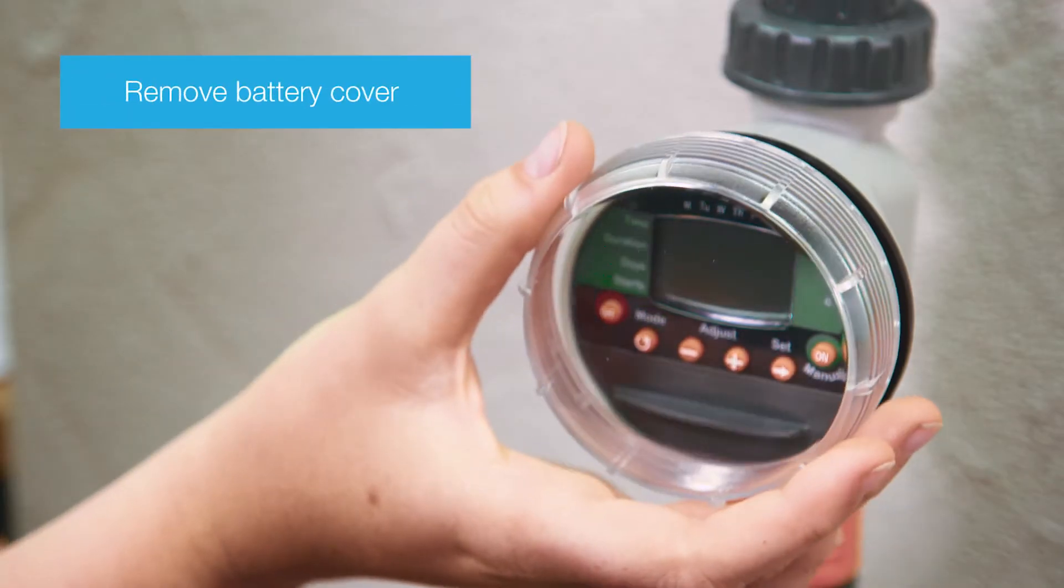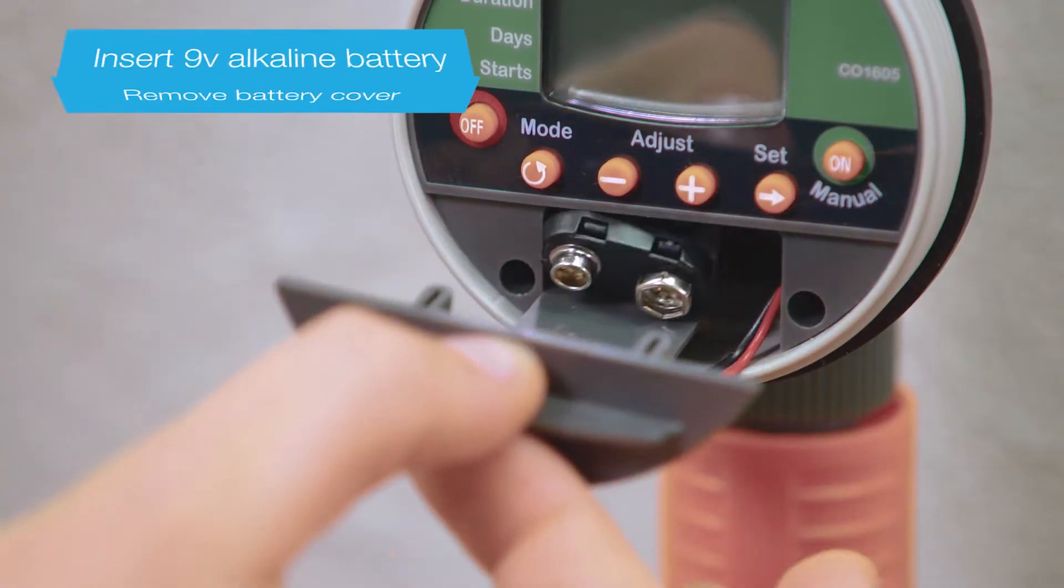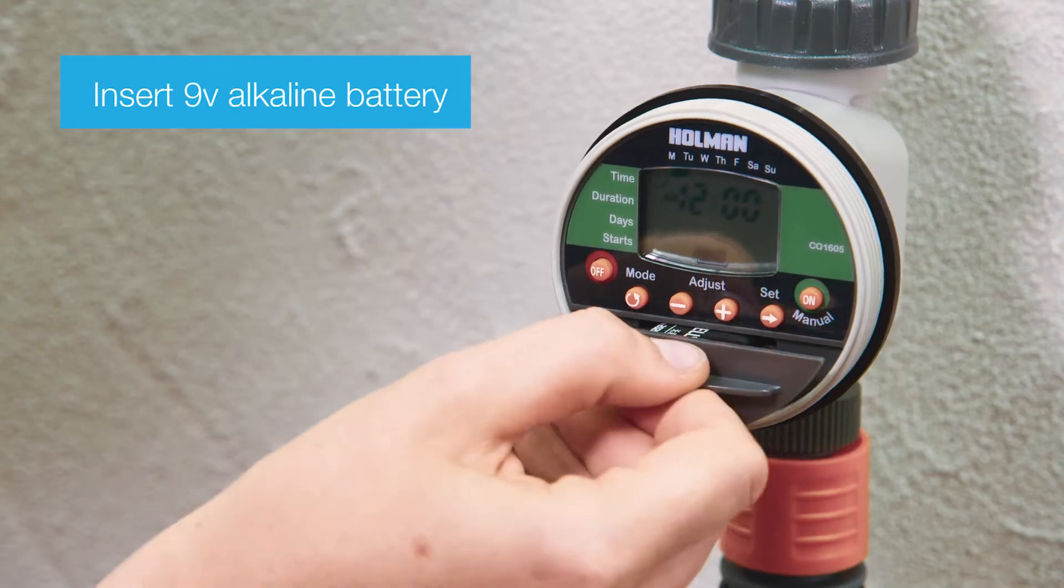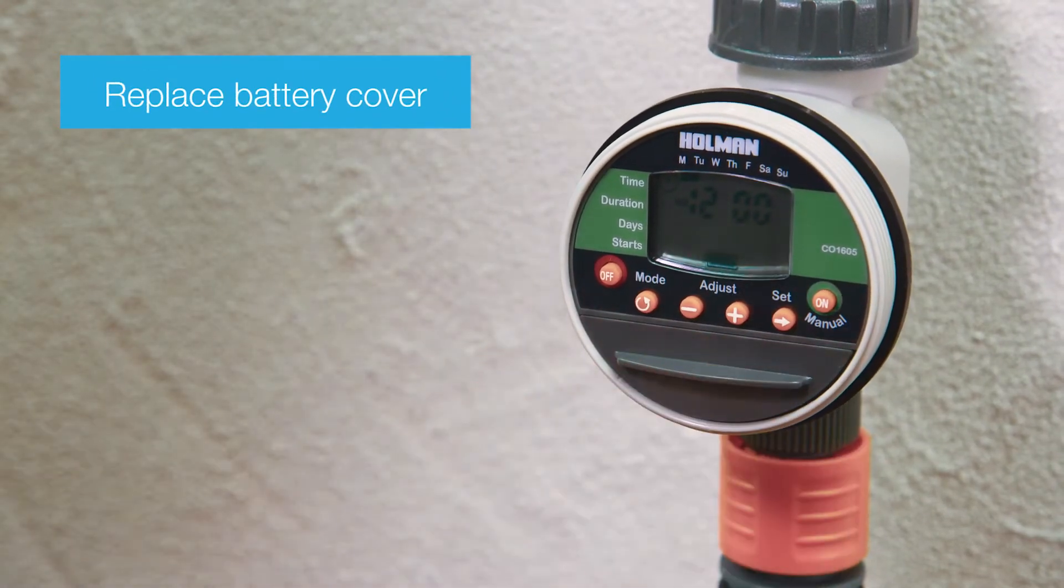Start by installing the battery. Remove the battery cover, insert a 9-volt alkaline battery, and then replace the battery cover.